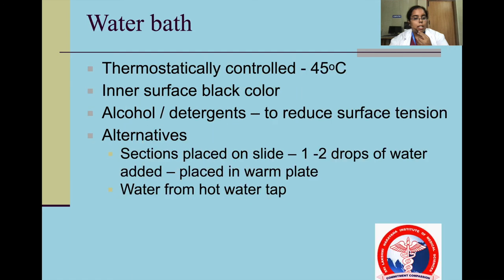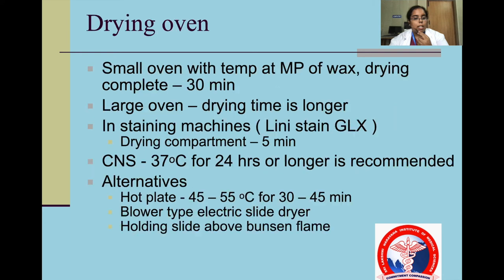The water bath is a thermostatically controlled water heater that maintains water at 45 degrees Celsius. Alternatives include placing 1 to 2 drops of water on a warm plate or using water from a hot water tap. The dry oven is used to increase the melting point of wax, drying completely for 30 minutes. Alternatives are hot plates, blower type electric slide dryers, and holding the slide above a Bunsen flame.